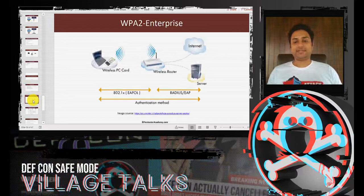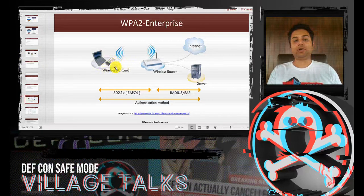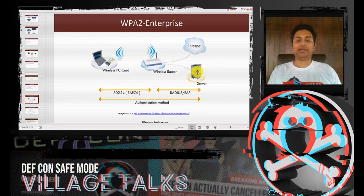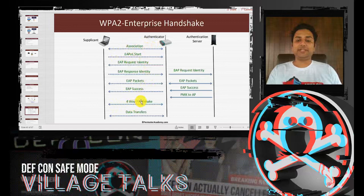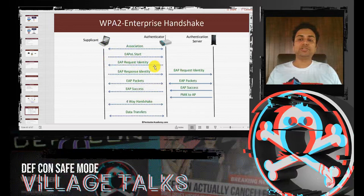WPA2-Enterprise looks like this: you have a Wi-Fi client (laptop or PC), an access point connected to a RADIUS server. The RADIUS server is the authentication backend. The 4-way handshake still occurs since it's WPA, but because there is no shared passphrase, EAP (Extensible Authentication Protocol) is used to authenticate with the authentication server. The client sends an EAP-Start, the AP requests its identity (the username), which is forwarded to the RADIUS server.